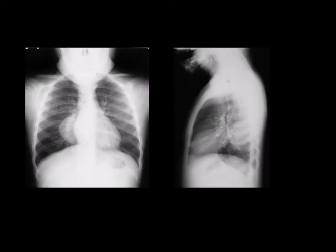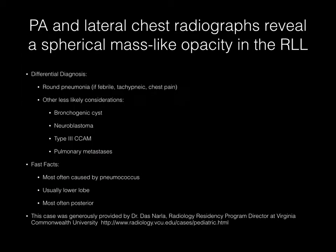Now pause your media player. PA and lateral chest radiographs demonstrate a spherical mass-like opacification in the right lower lobe. Your primary differential diagnosis should include round pneumonia, especially if the patient is febrile, tachypneic, or has chest pain. Other less likely considerations include bronchogenic cyst, neuroblastoma, type 3 C-CAM, and pulmonary metastases.